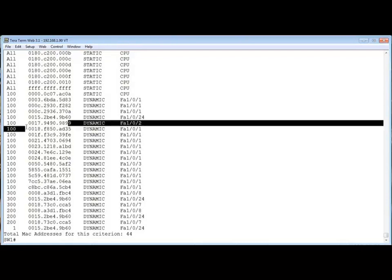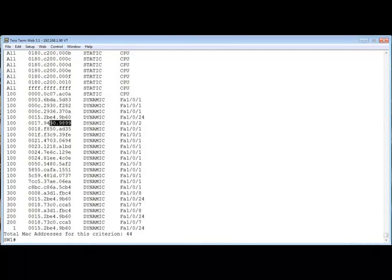Notice that we've got MAC addresses. Let me highlight one for you. We've got these MAC addresses that have been learned off of different ports. So the MAC address you're seeing right now has been learned off of port FastEthernet 1-0-2.